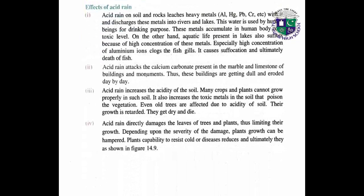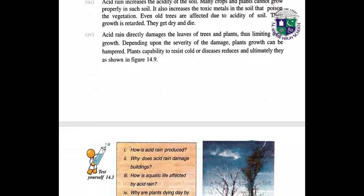What are the effects of acid rain? Acid rain on soil and rocks leaches heavy metals and discharges them into rivers and lakes. This water is used by humans for drinking; these metals accumulate in the human body to a toxic level. Aquatic life in lakes also suffers because of the high concentration of these metals. Acid rain attacks the calcium carbonate present in marble and limestone of buildings and monuments. Acid rain increases the acidity of soil; many crops and plants cannot grow properly in such soil. Acid rain directly damages the leaves of trees and plants, limiting their growth, and depending on the severity of damage, growth can be seriously hampered.